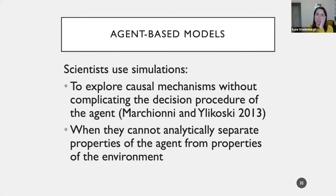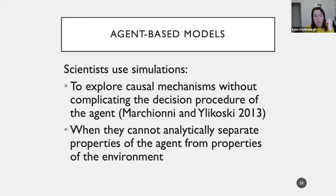Under what conditions are agent-based models or simulations more broadly useful? Scientists use simulations, I'd argue, first to explore causal mechanisms without complicating the decision procedure of the agent, and second when they cannot analytically separate properties of the agent from properties of the environment. Why might we not want to complicate the agent's decision procedure, or why might it be difficult to analytically separate agent properties from environment properties?